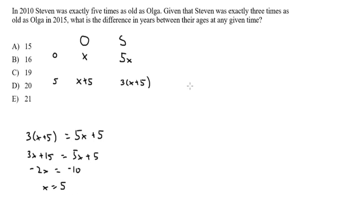Now, remember what X actually means. X is the age of Olga in 2010. And what are we trying to find? Well, we're trying to find the difference in years between their ages. So, that's quite easy. We just need to work out the age of Stephen in 2010 as well. So, his age is just 5X. So, Stephen's age is going to be 25. So, we know that the age difference must be 25 minus 5, which is equal to 20. And that is answer D.